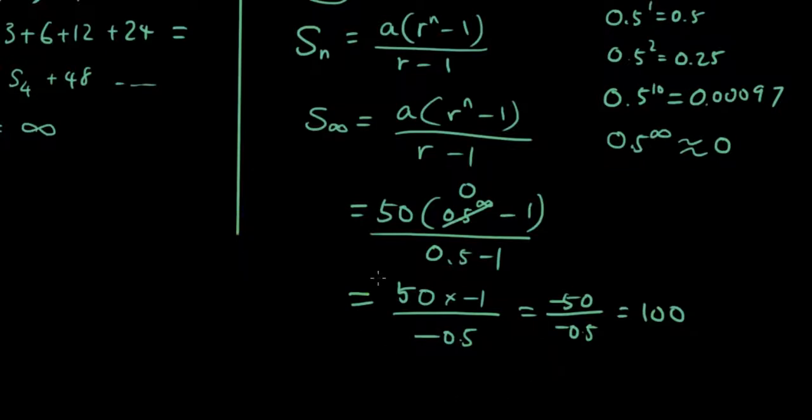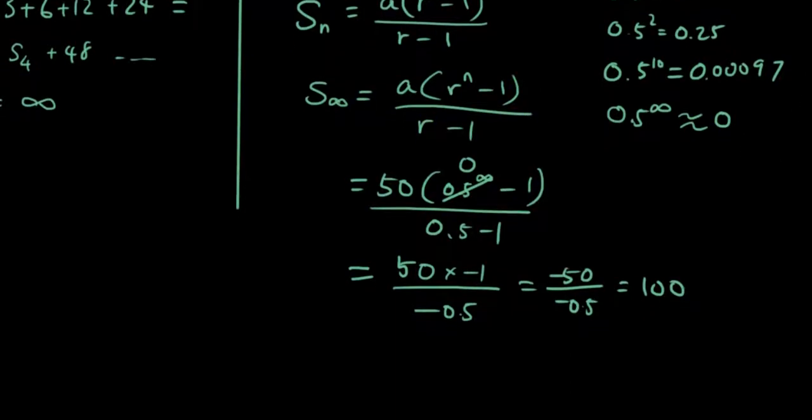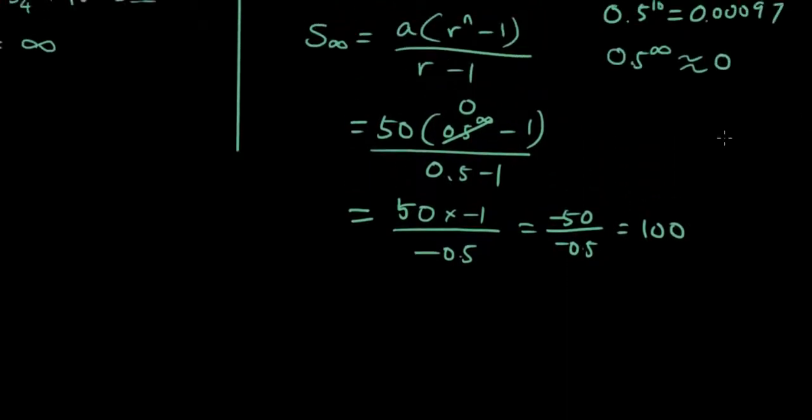So this is the long way to do it, because we needed to explain how to do it, but the short way to do it, now that you understand the concept, is just to use the sum to infinity formula, which is a divided by 1 minus r.